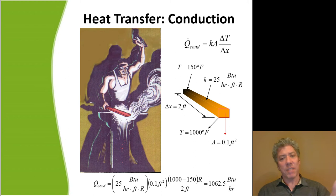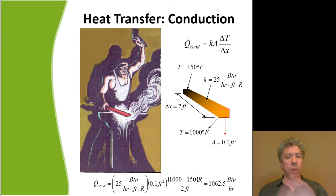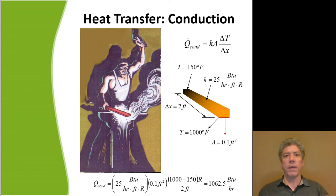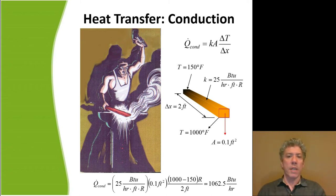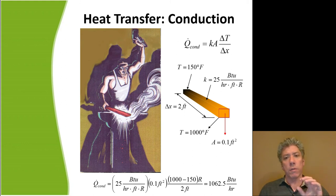It is obvious there must be heat transfer down the length of that rod. Let's think of the blacksmith holding the piece of metal with the end a foot and a half or so away from his hand being red hot. How would we quantify the rate of heat transfer? We use an equation called Fourier's rate equation.